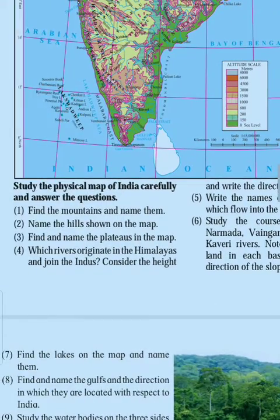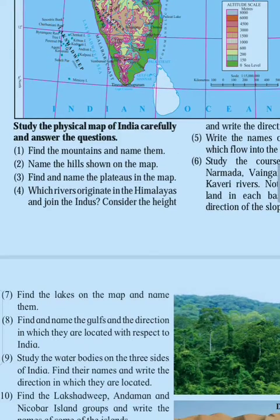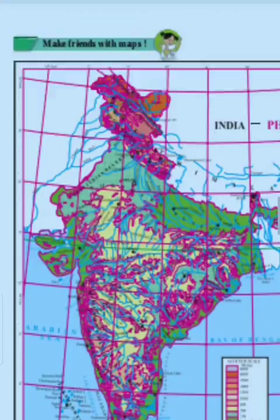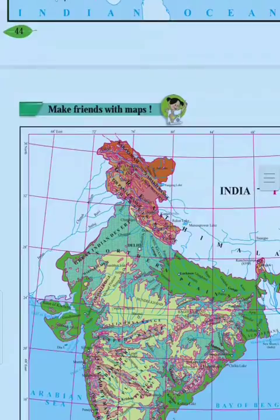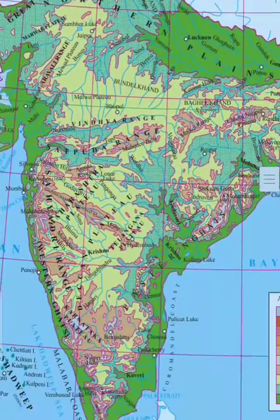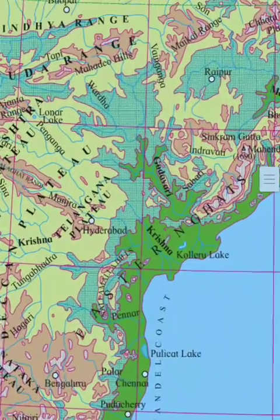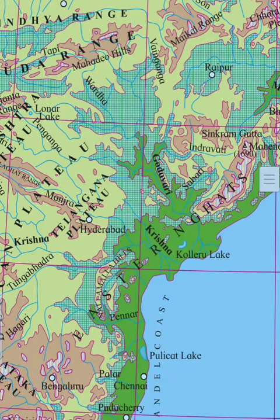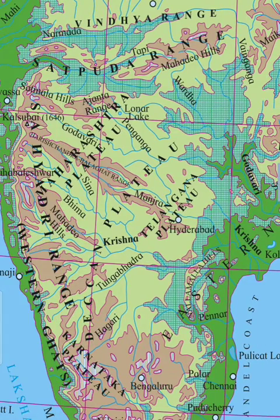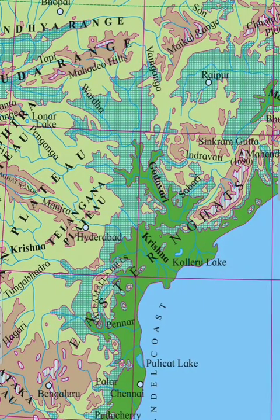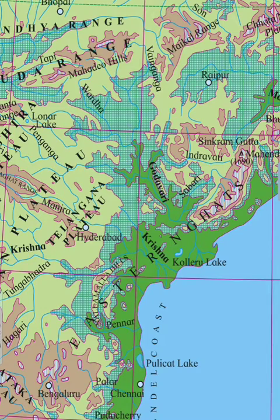Now see the next question. Find the lakes on the map and name them. Which are the different lakes on the map? If you observe the map carefully, Koleru Lake is there. Different lakes are there — Valwar Lake, Dal Lake, Chilka Lake, Lonar Lake, and other lakes are there.